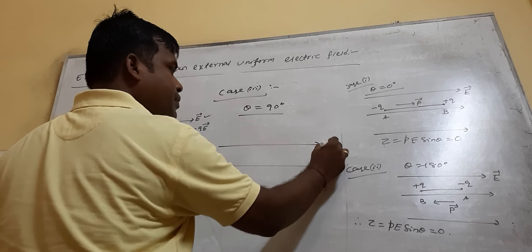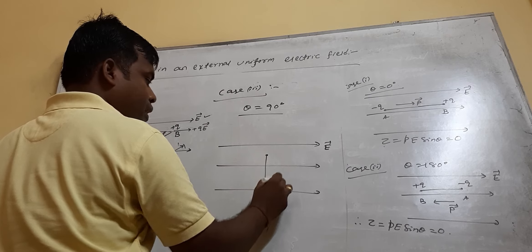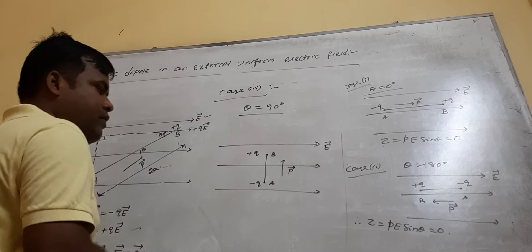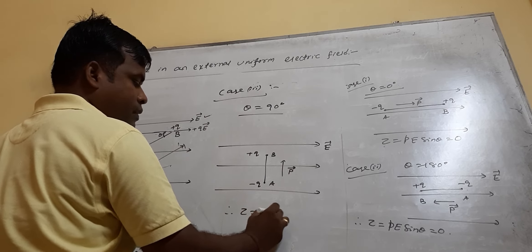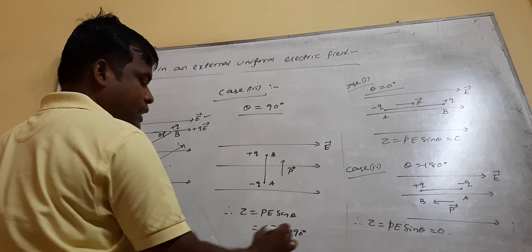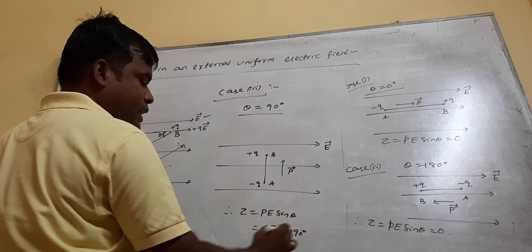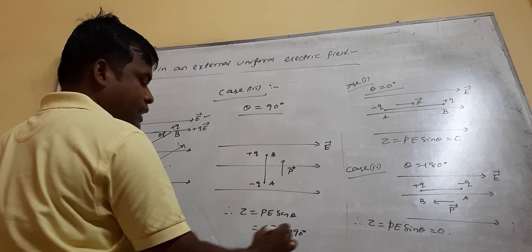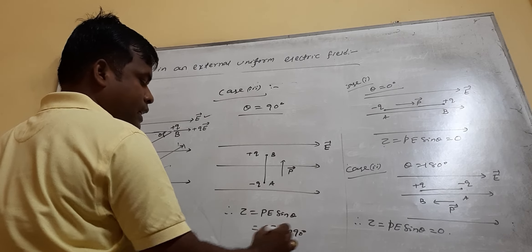Case 3: when theta equals 90 degrees. The electric field is horizontal, and the dipole is placed such that its dipole moment is perpendicular to the field — that is, minus Q at one end and plus Q at the other, pointing upward. Then tau equals PE sin 90 degrees, which equals PE. This is the maximum value. The torque is maximum when the dipole moment is perpendicular to the electric field.